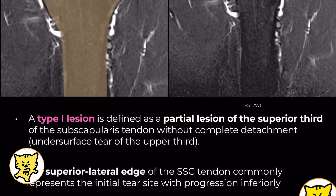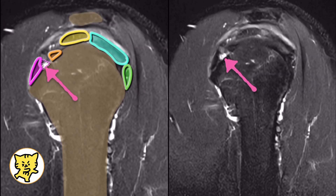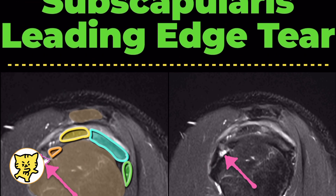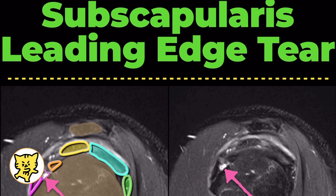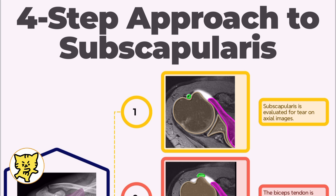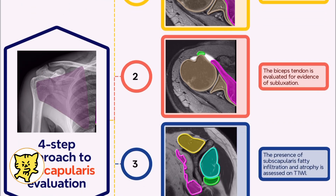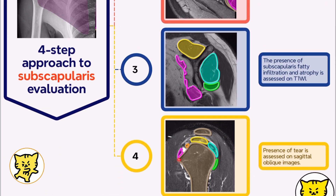Over time, the tear can extend further down, so identifying it early is critical. Subscapularis tears can be tricky to catch, but sagittal images are great for confirming their presence and extent. When you know where to look — right at the superior footprint of the subscapularis — you can pick up these subtle injuries and make a more accurate diagnosis.